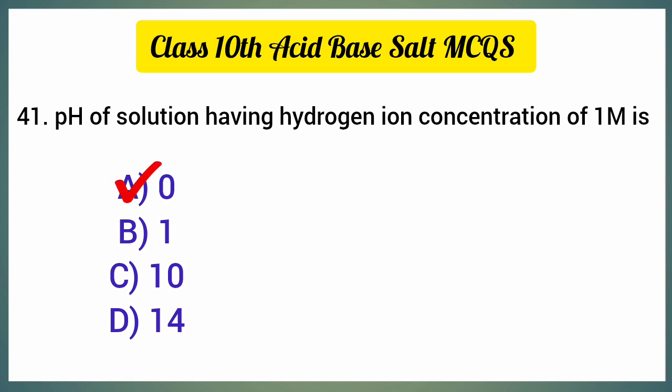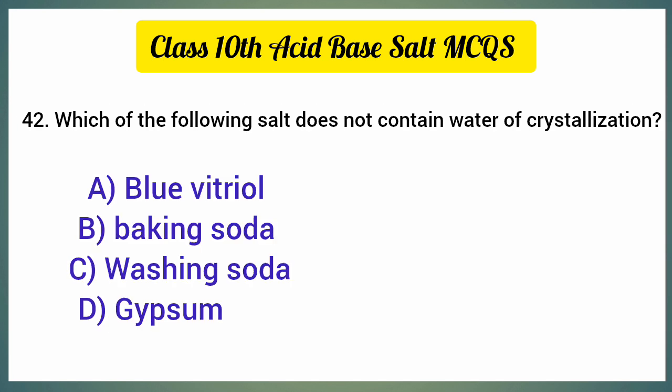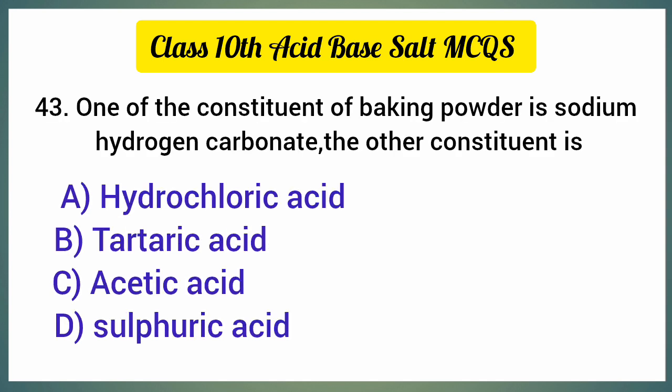The pH of a solution having hydrogen ion concentration of 1 molar is — the correct option is option A, zero. Which of the following salts does not contain water of crystallization? The correct option is option B, baking soda.